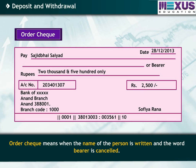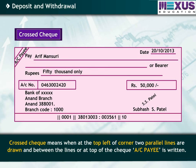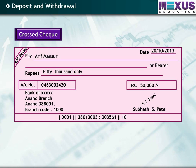Order check means when the name of the person is written and the word 'bearer' is cancelled. The bank verifies the details of whom the check belongs to and then makes payment. Cross check means when at the top left corner two parallel lines are drawn and between the lines, or at the top of the check, 'account payee' is written. The amount written on the check is deposited into the account of the person in whose favor the check is written.